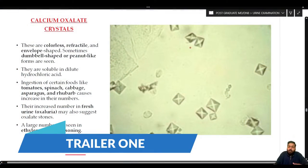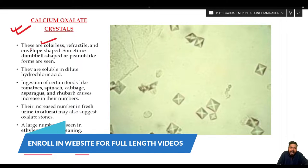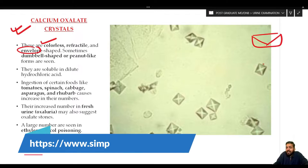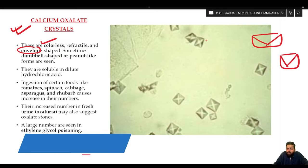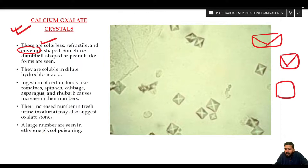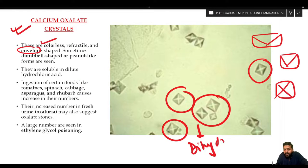The next type of crystal that you might have come across, very commonly seen in normal acidic urine, is the calcium oxalate crystal. As you can see, they are colorless, refractile, and envelope-shaped — basically a squarish envelope. These are the calcium oxalate dihydrate forms, which are envelope-shaped.